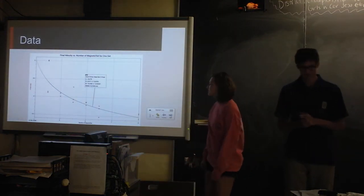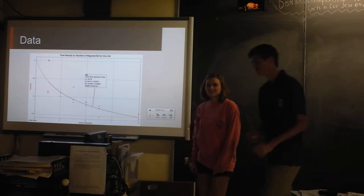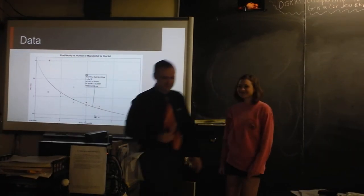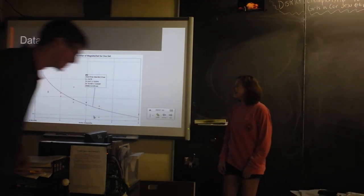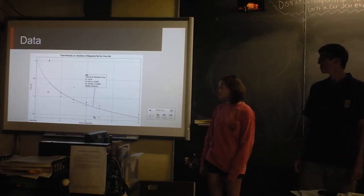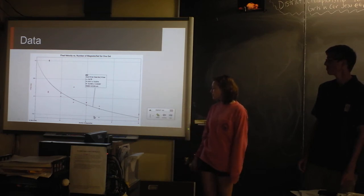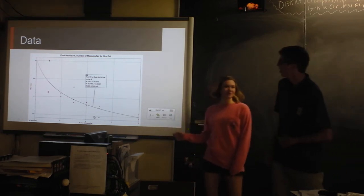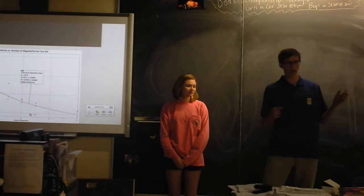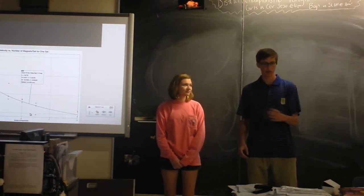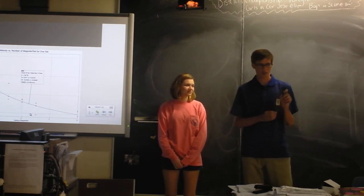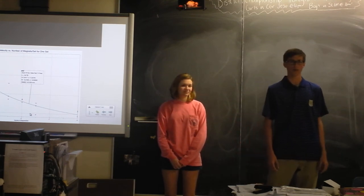So this is our data. Our first graph was the final velocity of the last ball versus the number of magnets per set for one set. And so we found it had a curved fit. So what we think is happening: initially we thought that the more magnets we added, the stronger the field would be and the faster it would accelerate. But every time it hits a new magnet, there's just some energy lost. So it ends up slowing down at the end the more magnets we added.